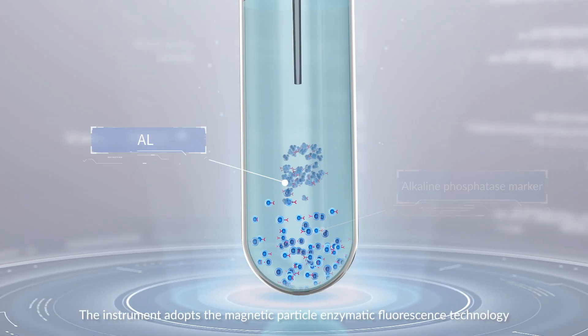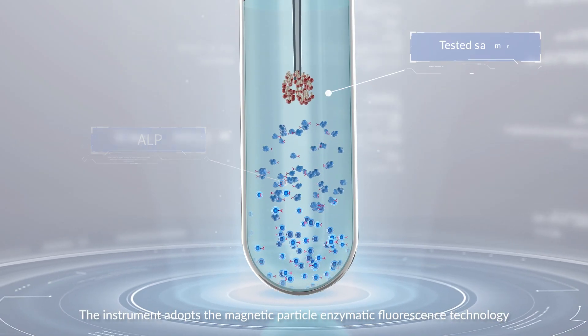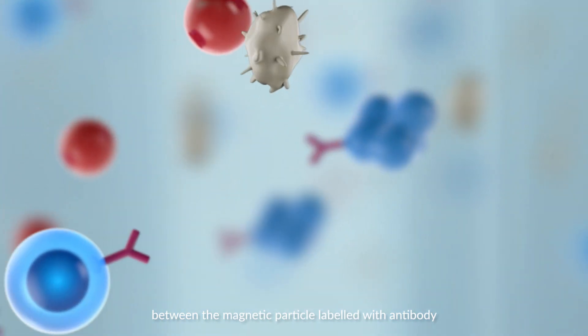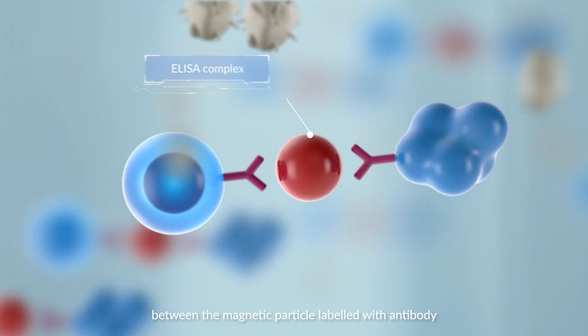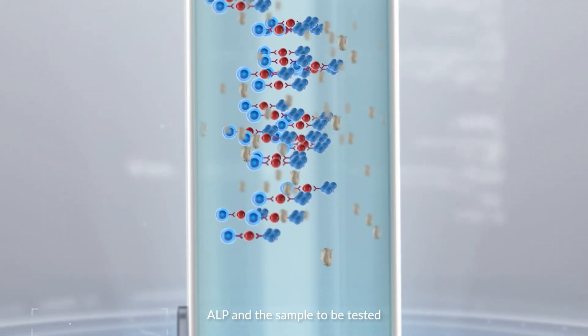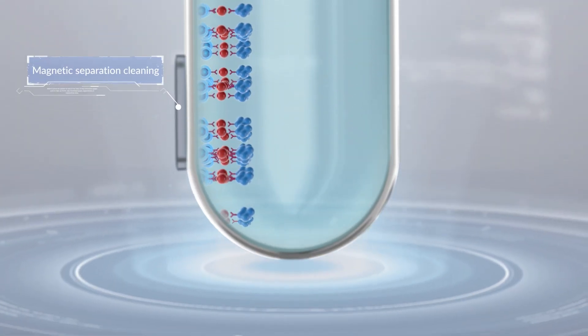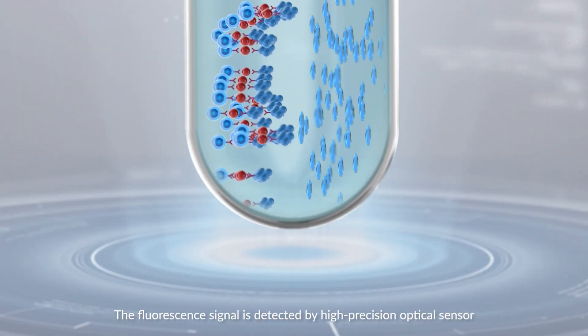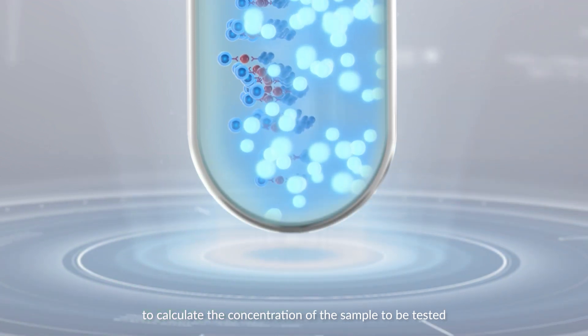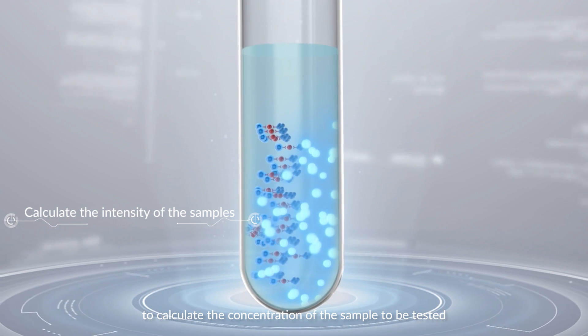The instrument adopts the Magnetic Particle Enzymatic Fluorescence Technology to generate immune reaction between the magnetic particle labeled with antibody, ALP, and the sample to be tested. The fluorescence signal is detected by High Precision Optical Sensor to calculate the concentration of the sample to be tested.